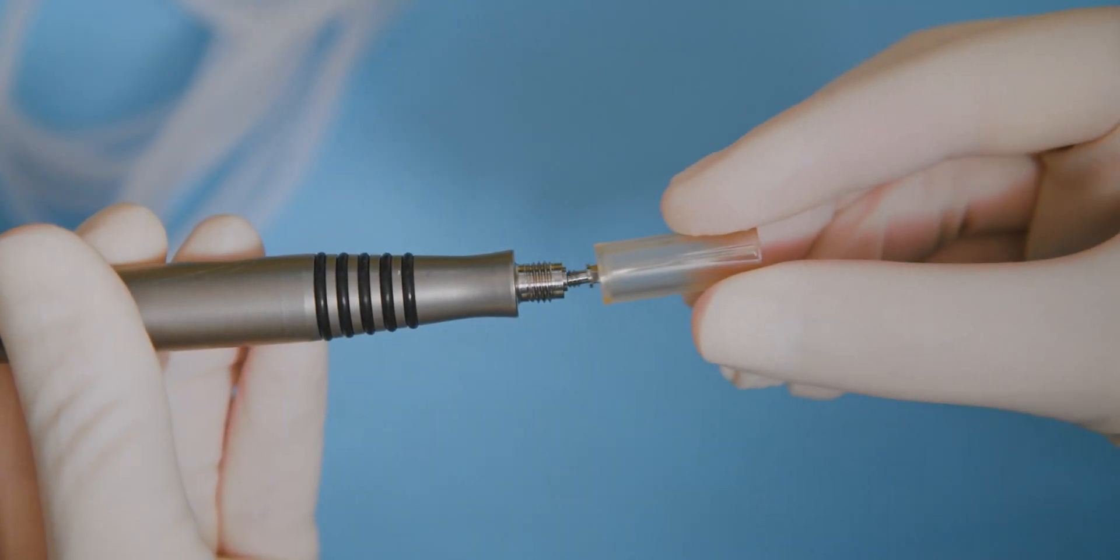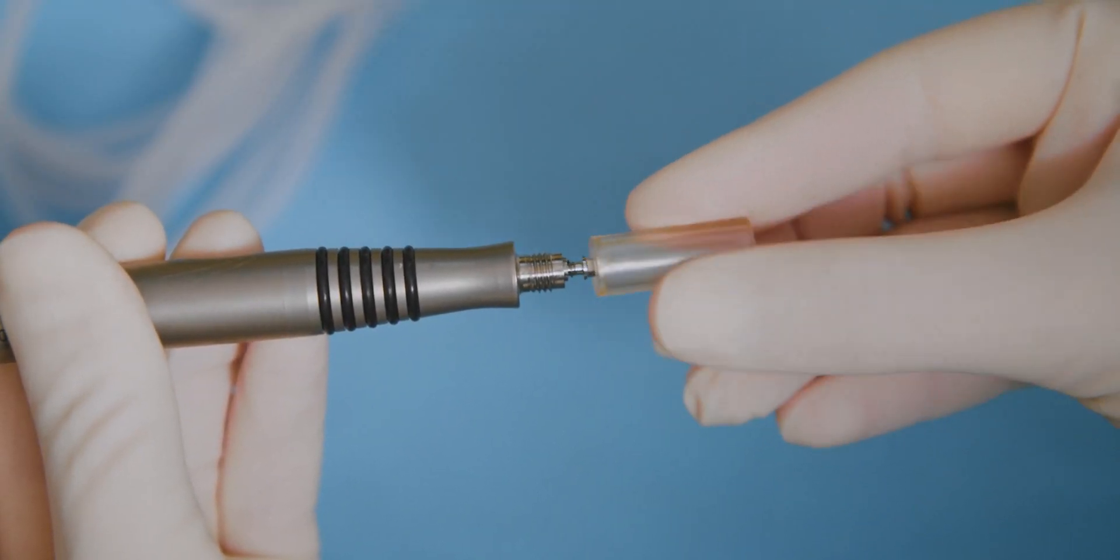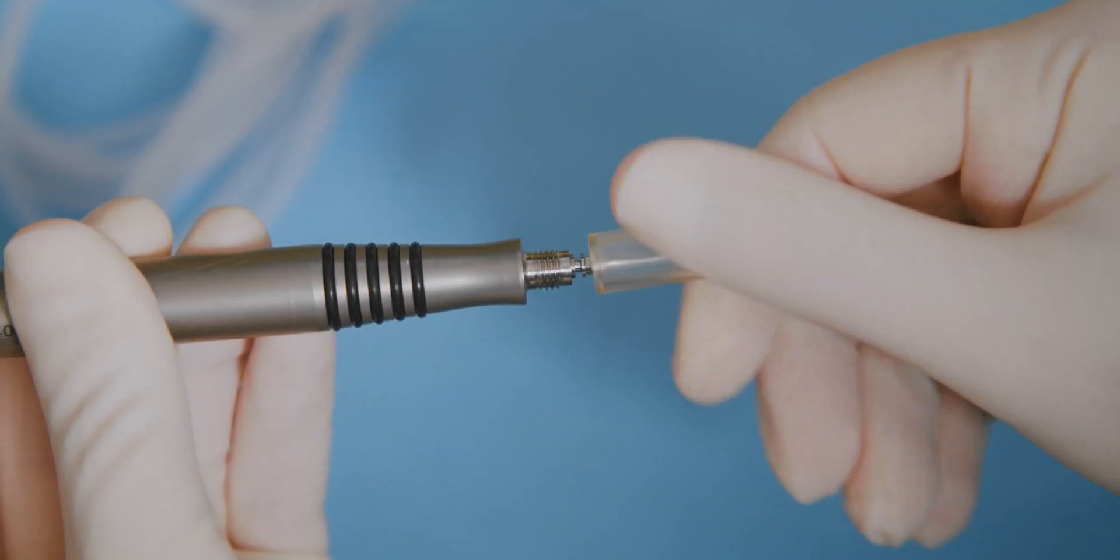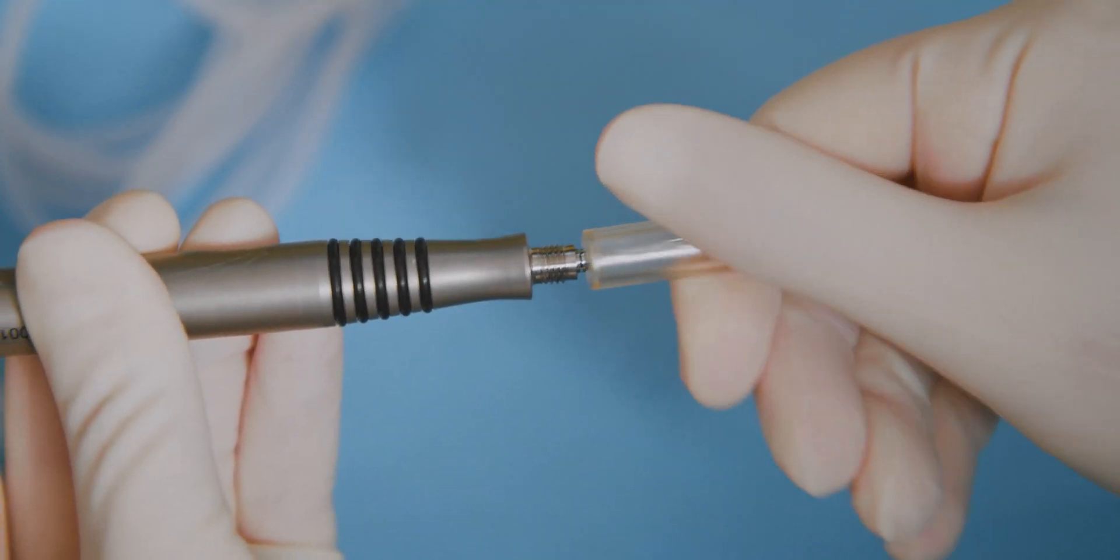Connect the easy FACO tip to the FACO handpiece. Turn the tip gently in a clockwise direction and turn the tip until it locks into position.